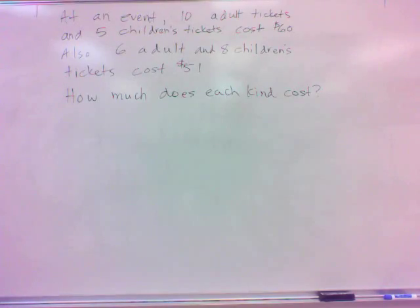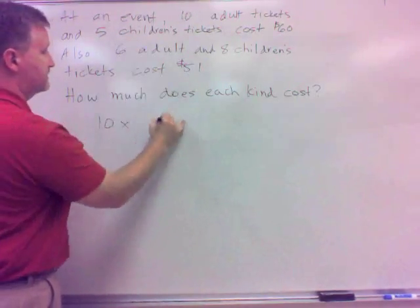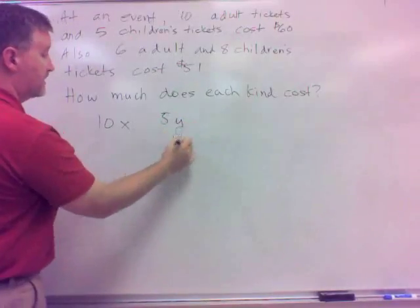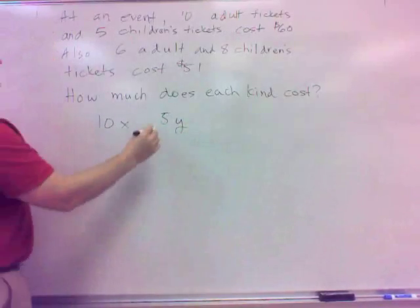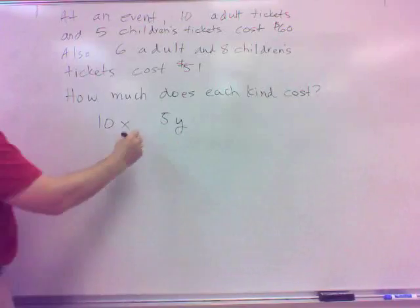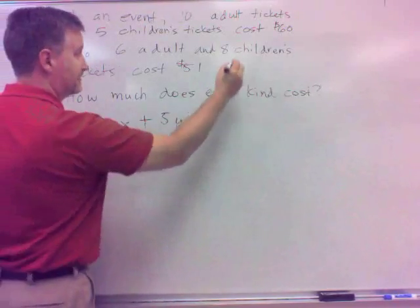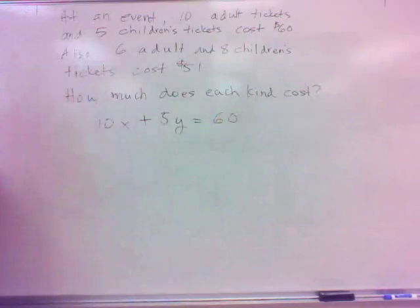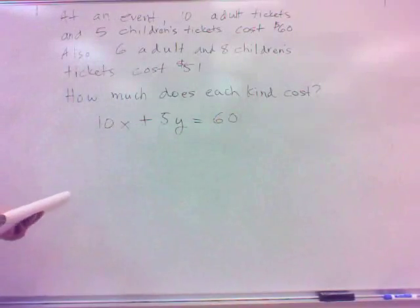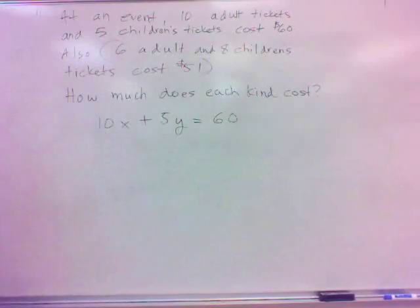If I put that down into an equation, letting X be the adult price and Y be the children's price, well, if I bought ten adult tickets, that's going to be ten times X for the price of them. And if I buy five children's tickets, Y being the price of the children's ticket, that would be five times Y. Well, if we add those two together, doesn't that equal the total cost there of 60? So we set up a nice, neat little equation.